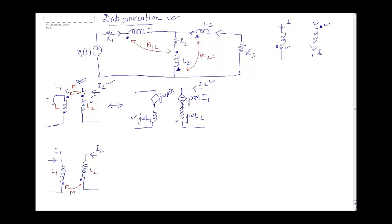Don't think that this induced current is the same as I1 — it is an extra current due to the dependent source. Similarly, for the dot on L2: I2 is entering here, so at the corresponding dot it should be leaving. If it is leaving that dot, then that terminal should be minus and the other should be plus. Again, don't confuse this current with I2. So this circuit should be converted in this way.